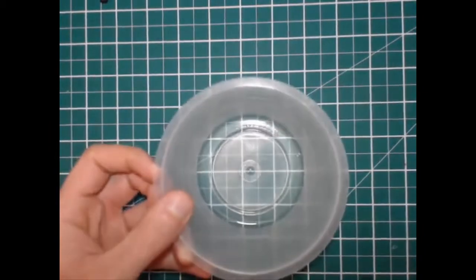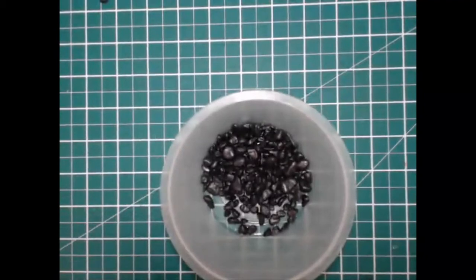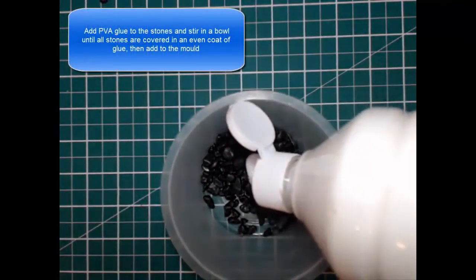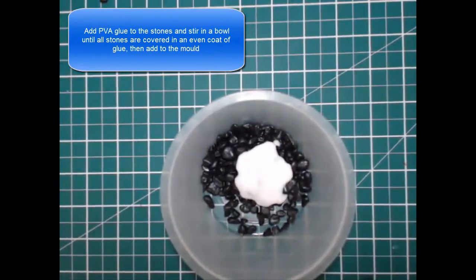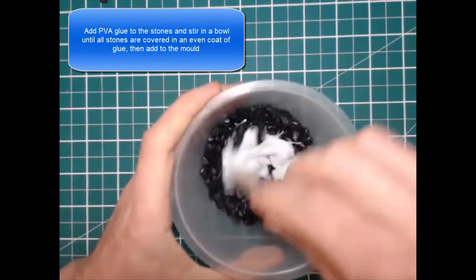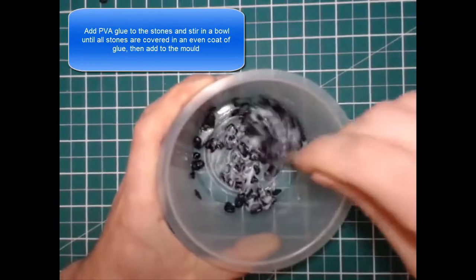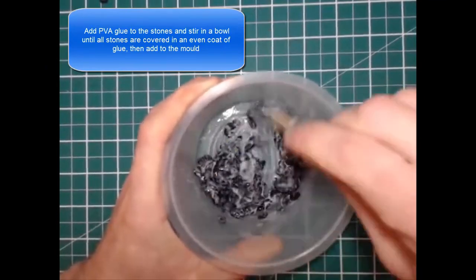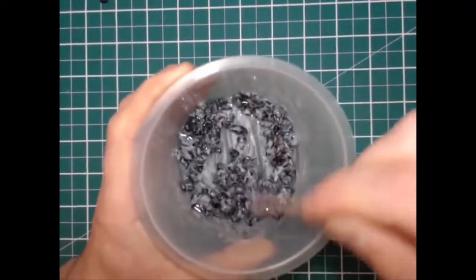You get your model stones and put them into the container. You get some PVA glue and mix it in. And then you mix all that up together so that all the stones get coated with PVA glue. As you can see there, there's a nice thick coat of glue on them.